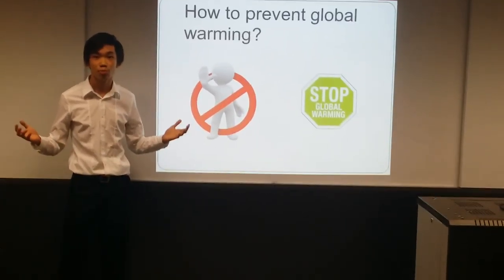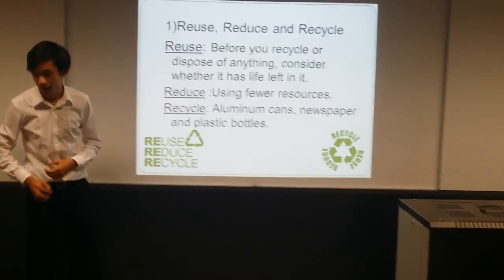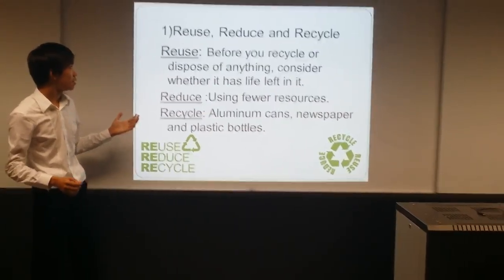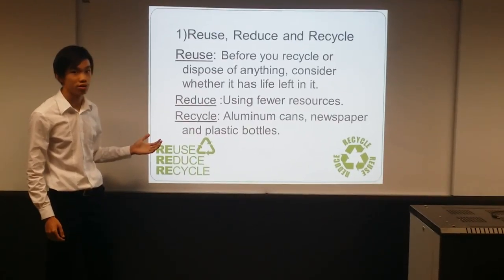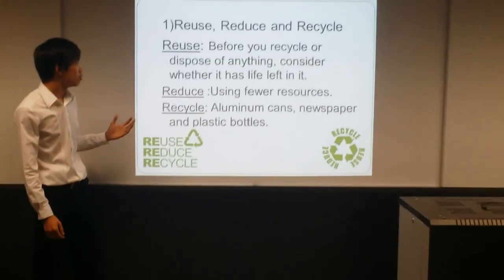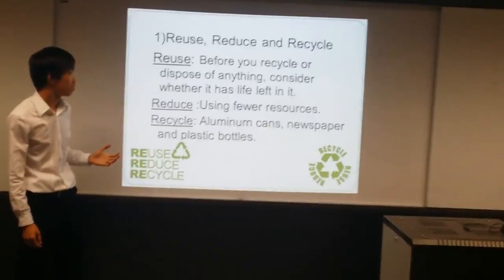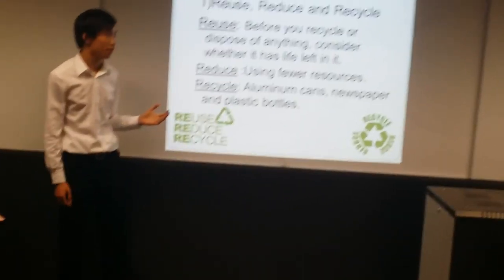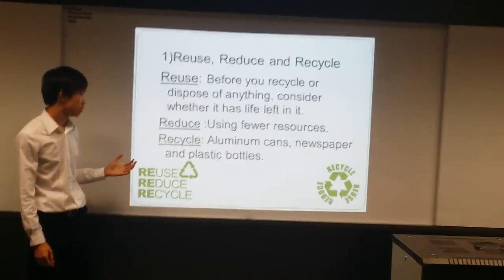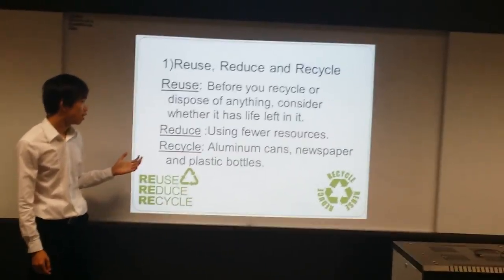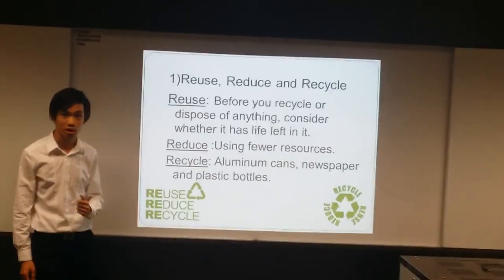How to prevent global warming? The first step is using the three R's: Reuse, Reduce, and Recycle. Reuse — before you recycle or dispose of anything, consider whether it still has life left in it. Reduce — using fewer resources. Recycle — you can recycle aluminium cans, newspaper, and plastic bottles.